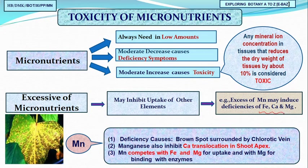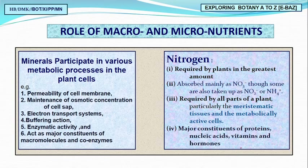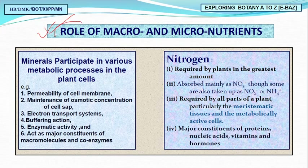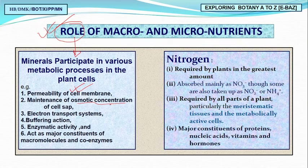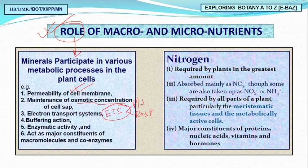Now we move to the role of macro and micronutrients. These nutrients are very important for the permeability of cell membranes, regulating osmotic concentration of cell sap, playing vital roles in the electron transport system (ETS) during photosynthesis and respiration, and in buffer action and enzymatic action.